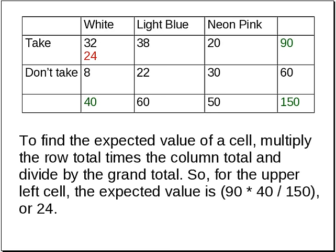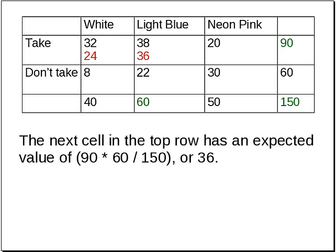To find the expected value of a cell, you multiply the row total — in this case 90 — times the column total, which is 40, and divide by the grand total, in this case 150. So for the upper left cell, you get an expected value of 24. The next cell in the top row has an expected value of 90 times 60, its column total, divided by 150, the grand total, which works out to 36.